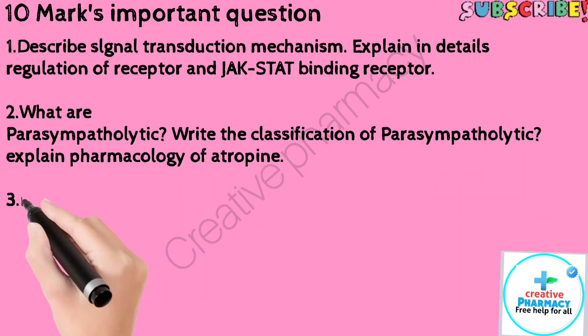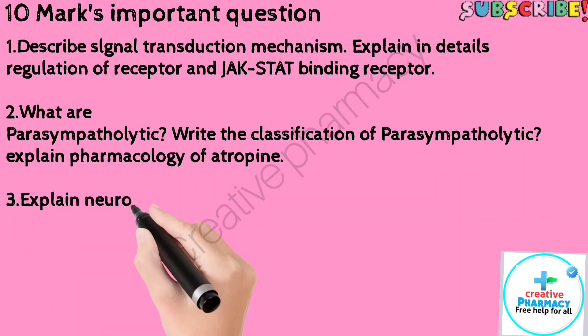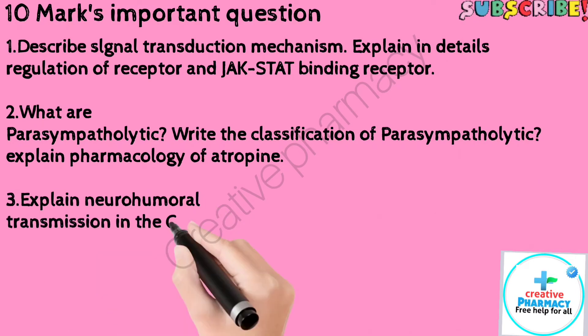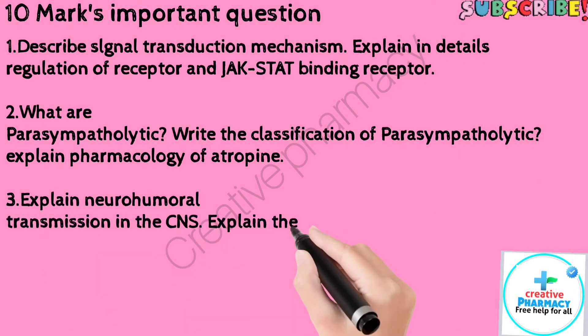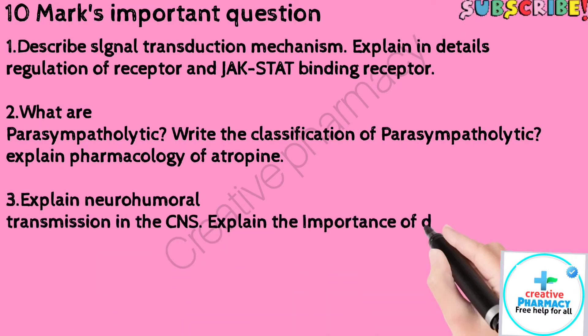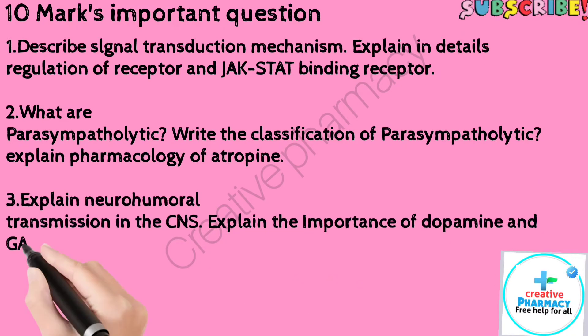Question 3: Explain neurohumoral transmission in the CNS. Explain the importance of dopamine and GABA.